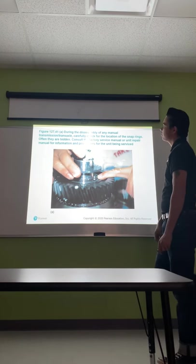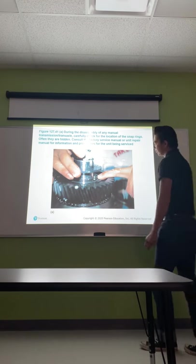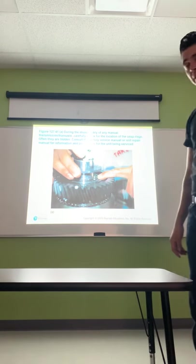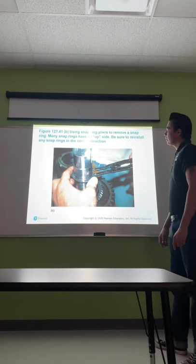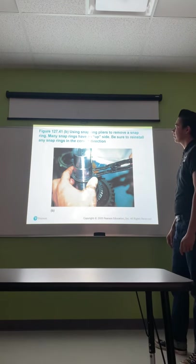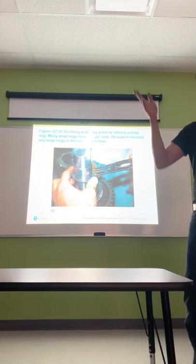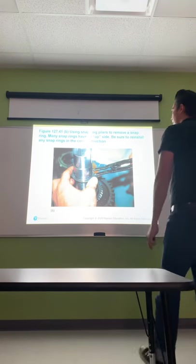During disassembly, carefully check for the location of snap rings — they are often hidden. Consult the factory service manual for information and procedures. Snap rings are throughout the entire main shaft and counter shaft, so make sure you put them back where they belong. Many snap rings have an upside — be sure to reinstall them in the correct direction. The reason they have an upside is for oil distribution; some have a small bevel that causes oil to drain back into the main shaft and keep it lubricated.